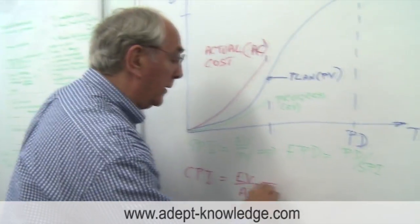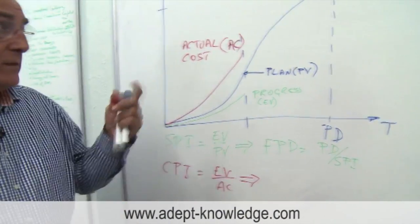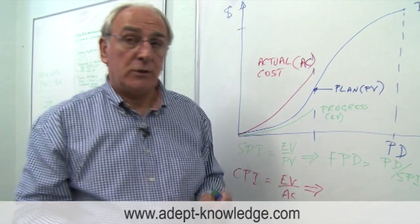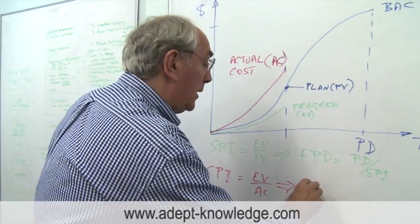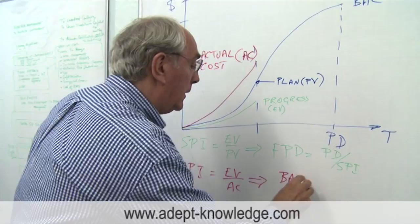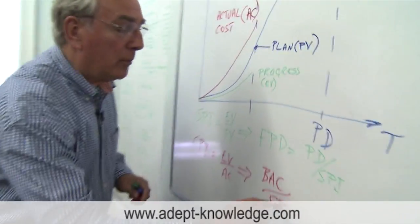Now we can use this to estimate our cost at completion or the estimated completion. And it's very simply the budget at completion divided by the cost performance index.